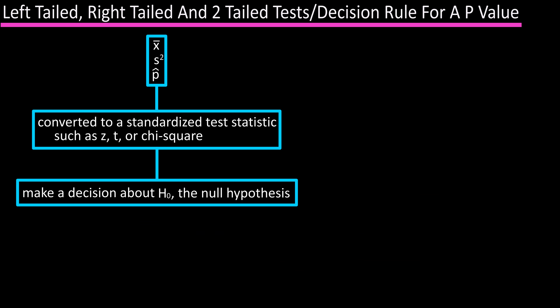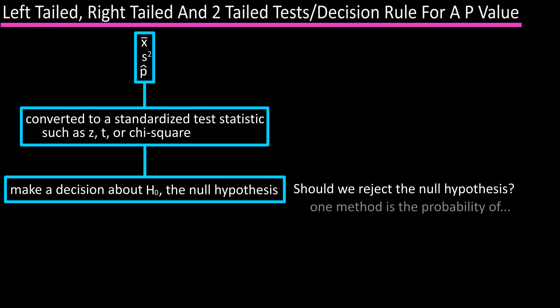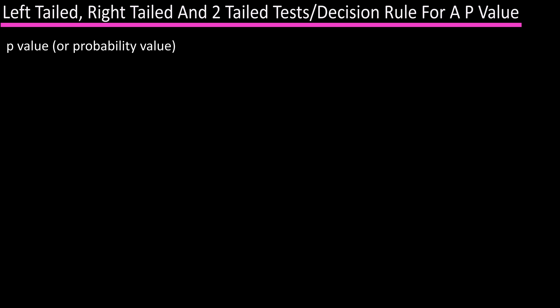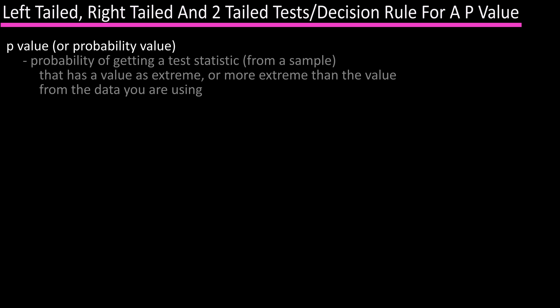In determining if we should reject the null hypothesis, one method is to look at the probability of getting a standardized test statistic that is less than the level of significance — and this is where a p-value comes in. A p-value, or probability value, of a hypothesis test is the probability of getting a test statistic, such as x-bar, s-squared, or p-hat, from a sample, whose value is as extreme or more extreme than the one determined from the sample data you are using.